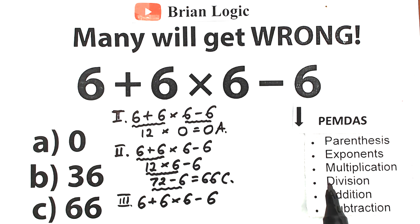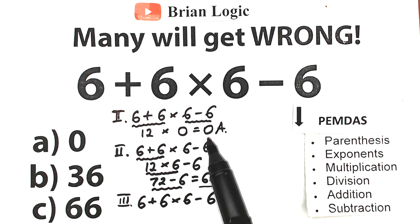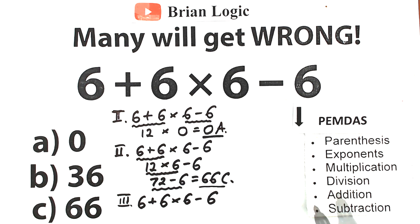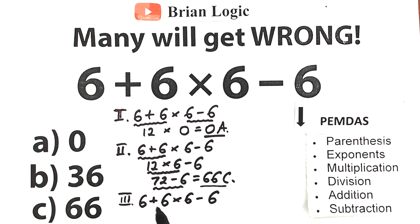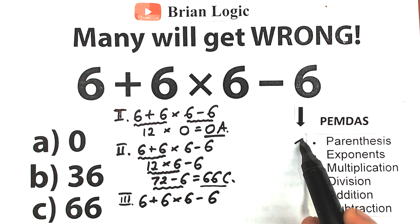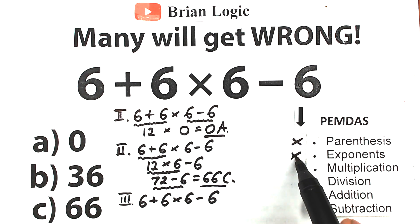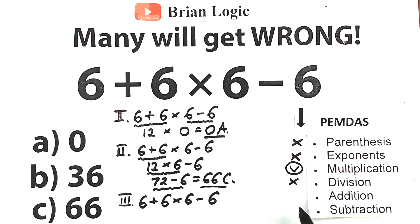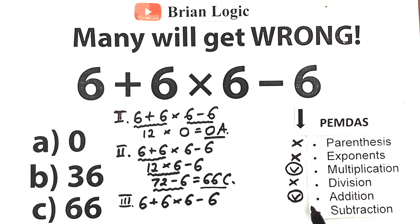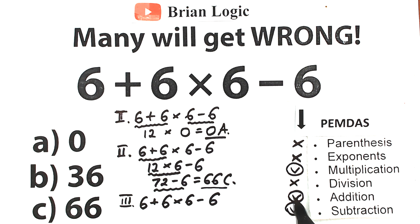Let's solve this question according to PEMDAS. We scan the expression: we don't have parentheses, so we reject that step. We don't have exponents, so we reject that. We do have multiplication. We don't have a division sign. We have an addition sign and a subtraction sign. So we have multiplication, addition, and subtraction — this is a really important moment.